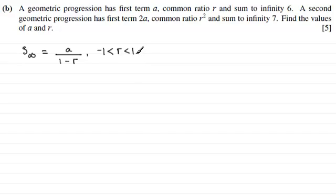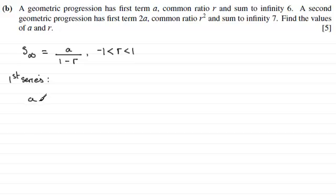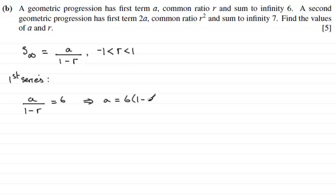We can apply it now in our question. If we look at the first series, we're told that it's got a first term a, common ratio r, and the sum to infinity is 6. So for the first series, a divided by 1 minus r must equal 6. Rearranging, a equals 6 multiplied by 1 minus r. We've got two unknowns in one equation, so we need another equation. I'll call this equation 1.